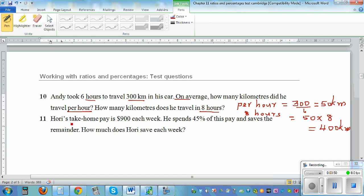Hori's take home pay is 900 dollars each week. He spends 45% of his pay and saves the remainder. So how much does he spend? He spends 45%. So how much does he save? He saves the remaining, which is 100 minus 45.